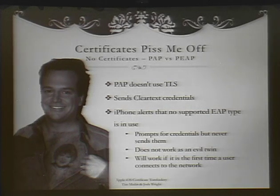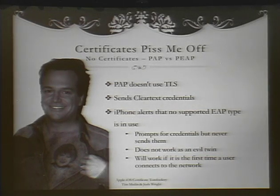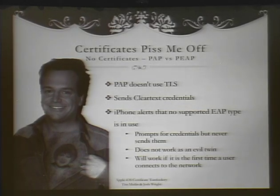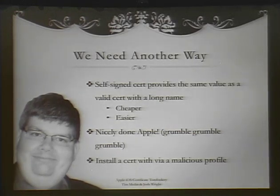We decided we'll use PAP — the cleartext authentication mechanism, it doesn't use TLS. Unfortunately for us — fortunately for Apple — Apple did some good stuff here. It realizes, hey, last time I talked to you we used some sort of authentication with certificates, I don't see those anymore, so we're going to fail. The user is going to see an error message, an unsupported EAP type. It's not going to allow us to authenticate that way. So we need another way — how else can we get some certificates on this device so we can effectively man-in-the-middle or do other attacks against the phone? Using the certificate method we were first looking at, a self-signed cert is just as effective — it's cheaper and it's easier.